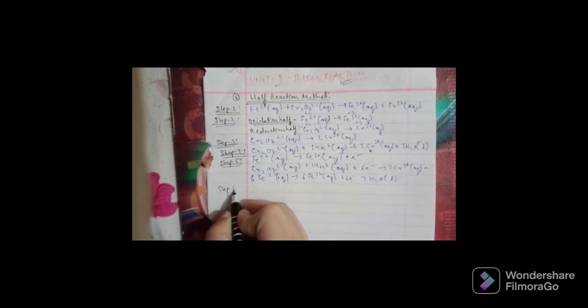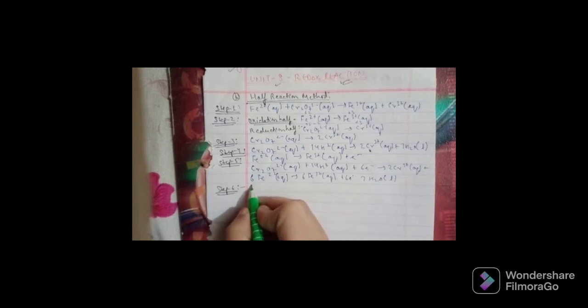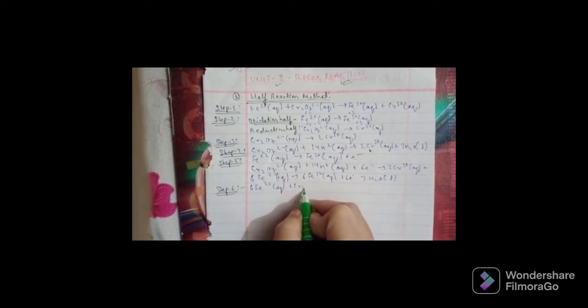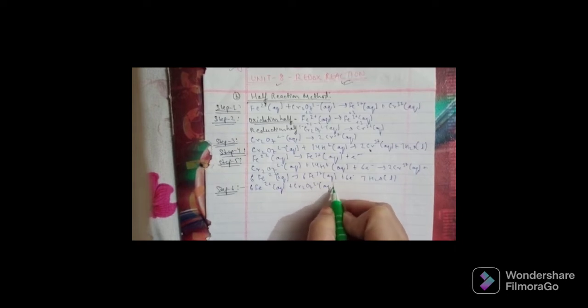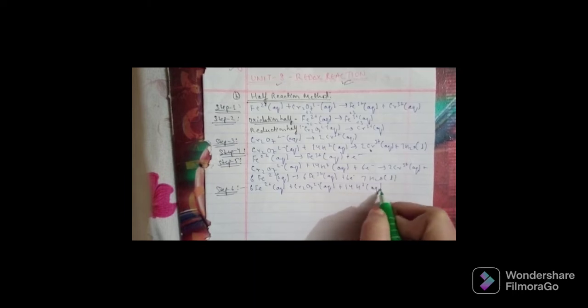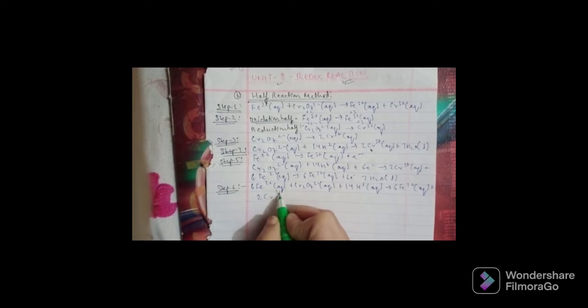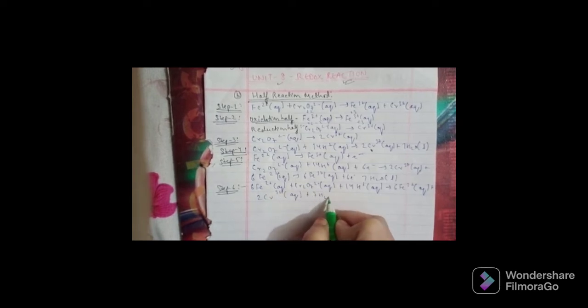To equalize the number of electrons in both half reactions, we multiply the oxidation half reaction by 6: 6Fe²⁺(aq) → 6Fe³⁺(aq) + 6e⁻. Step 6: Add the two half reactions and cancel the electrons on each side to get the net equation: 6Fe²⁺(aq) + Cr₂O₇²⁻(aq) + 14H⁺(aq) → 6Fe³⁺(aq) + 2Cr³⁺(aq) + 7H₂O(l).